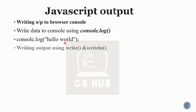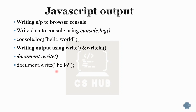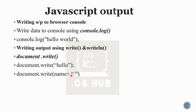We write console.log of 'Hello World'. We can also use the document.write function to print output, and document.writeln to print with a new line. We can also use a variable — for example, name equals 'computer' — and use concatenation with the plus operator to combine strings.